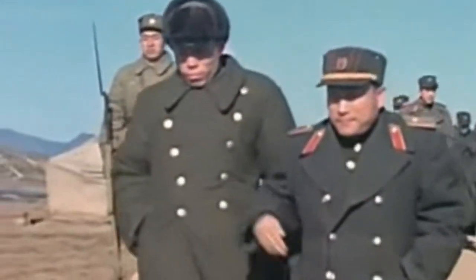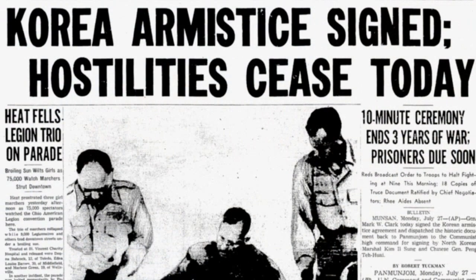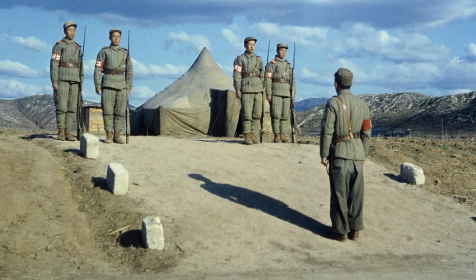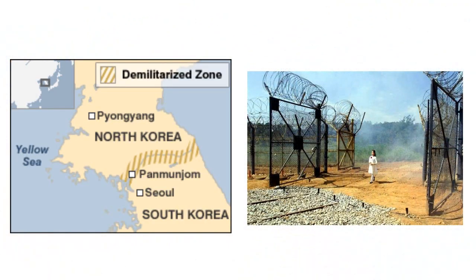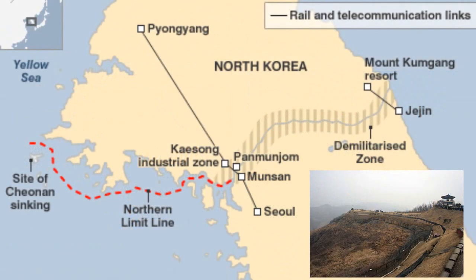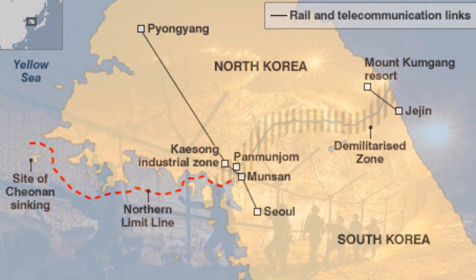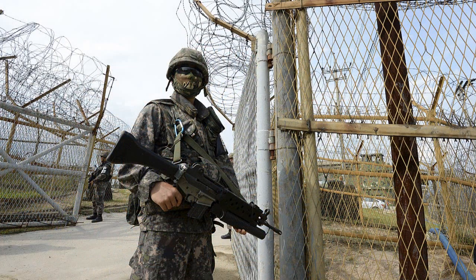After three long and bloody years, a ceasefire agreement was signed between the two nations in July of 1953. A demilitarized zone, known today as the DMZ, was established at the 38th parallel. The DMZ is a 2.5 mile wide zone between the two nations where no military personnel or equipment is allowed. The area surrounding the DMZ still remains the most heavily fortified border in the world.